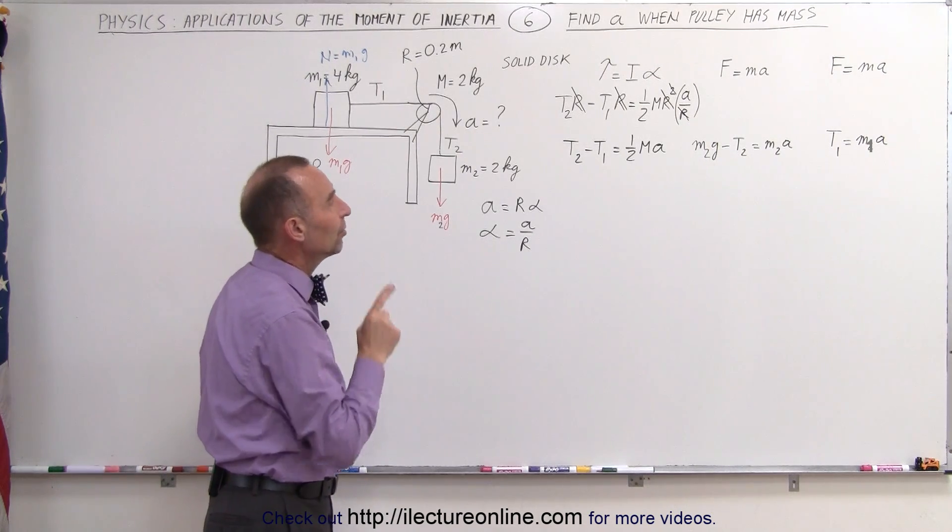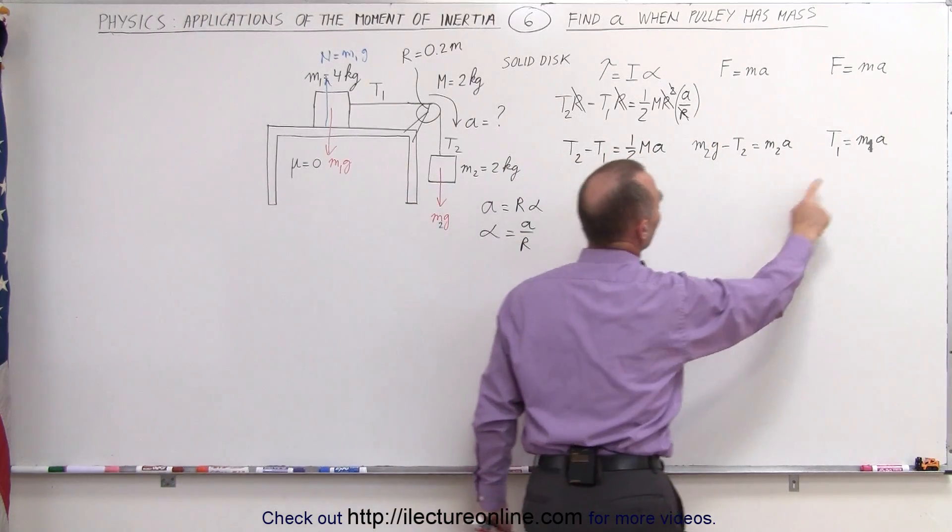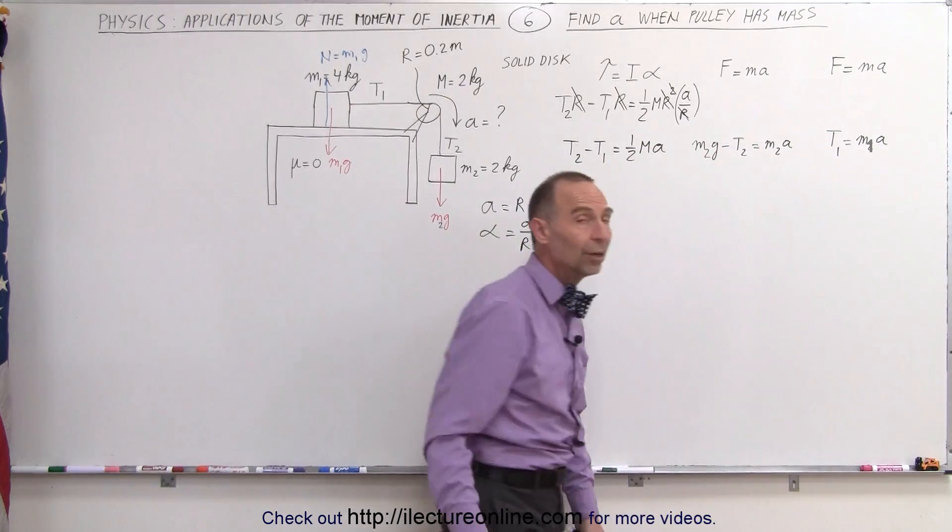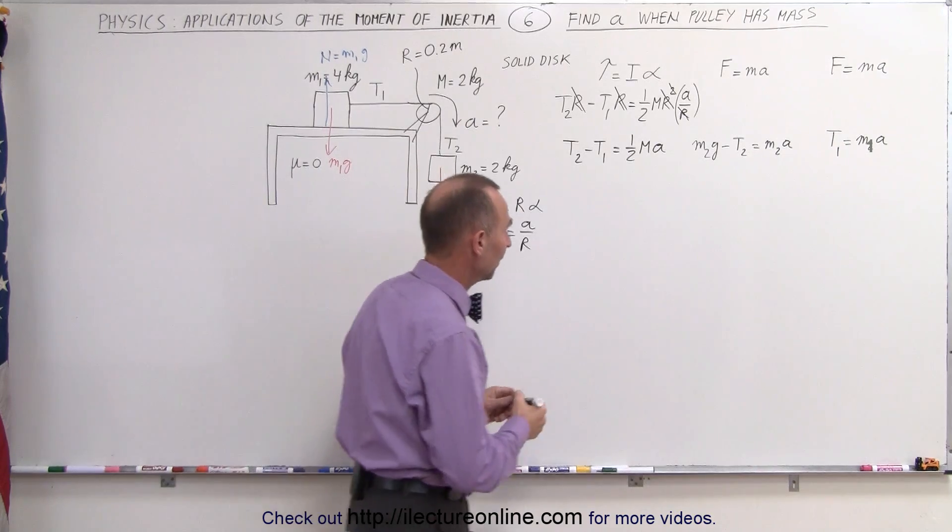What I can do now is I can solve this equation for T2, plug that in here, solve this equation for T1, plug that in here, and then I've eliminated T2 and T1, then I only have one unknown in this equation called the acceleration.